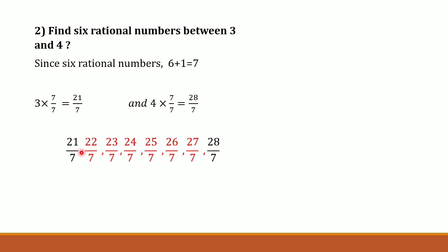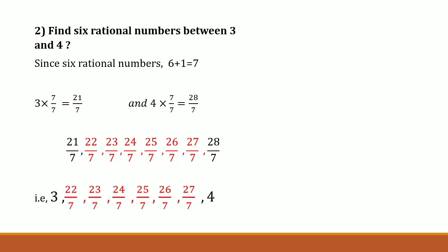The first and last numbers are verified by simplifying: 7 thrice is 21, that is 3, and 7 fours is 28, that is 4. So the six rational numbers that lie between 3 and 4 are 22 upon 7, 23 upon 7, 24 upon 7, 25 upon 7, 26 upon 7, and 27 upon 7.